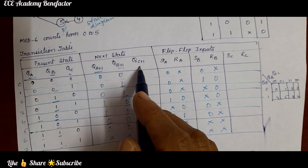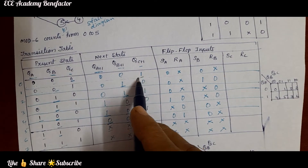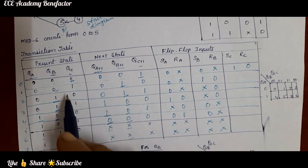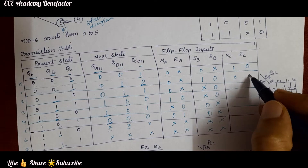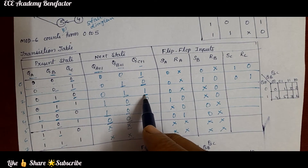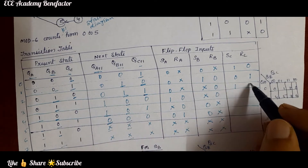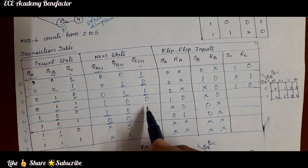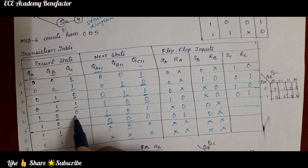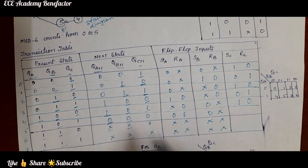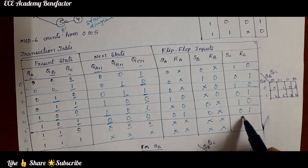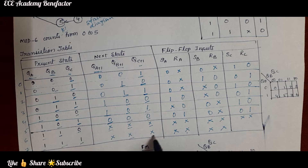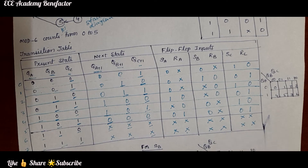Now we fill SC and RC by looking at QC and QC+1. For 01 it is 10; for 10 it is 01; for 01 it is 10; for 10 it is 01; for 01 it is 10; for 10 it is 01; for 00 SC=0x; and the do-not-care rows give do not care. So we have written the columns SA, RA, SB, RB, SC, RC.